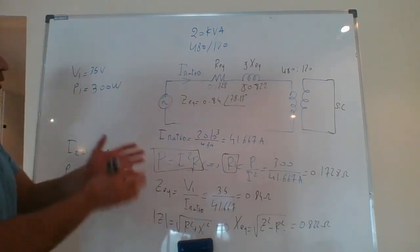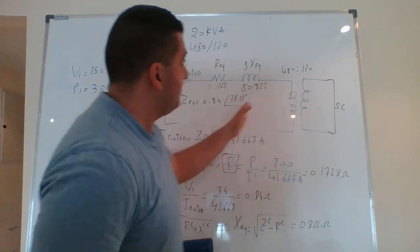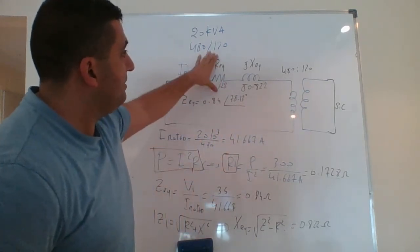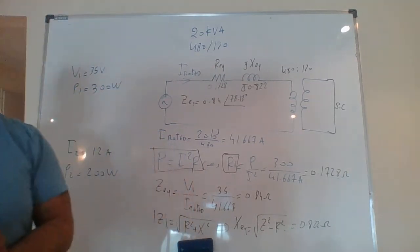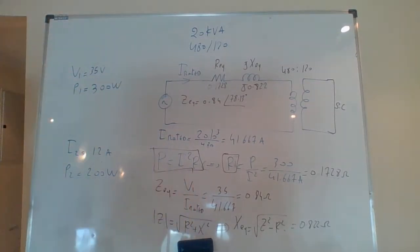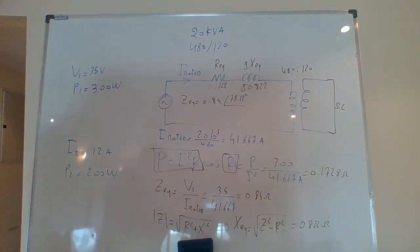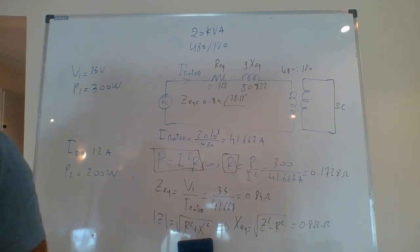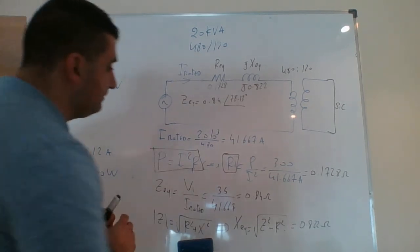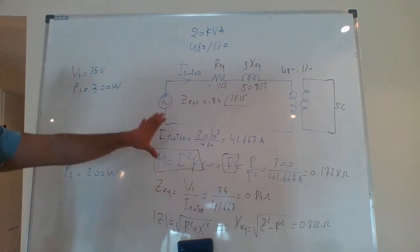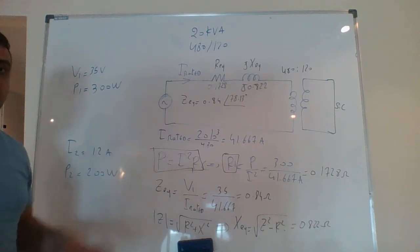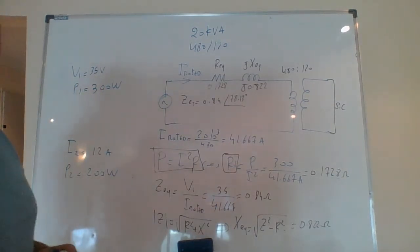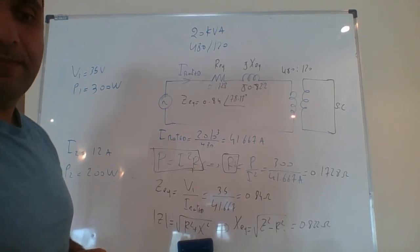That's how I used the short circuit test to determine the equivalent impedance, equivalent resistance, and equivalent inductance of the system. The second question: from the open circuit test, determine the shunt admittance referred to winding one, neglecting the series impedance.